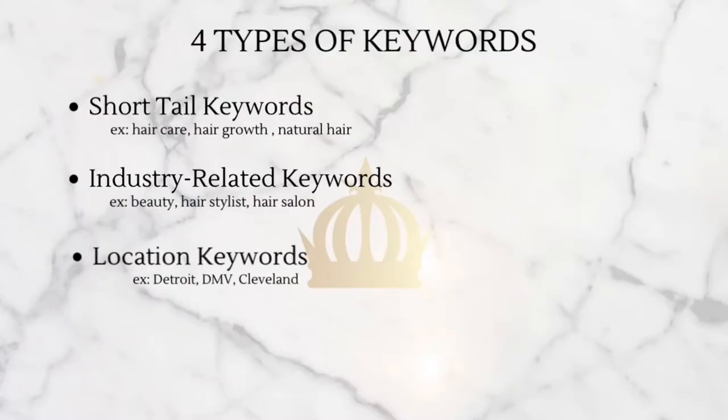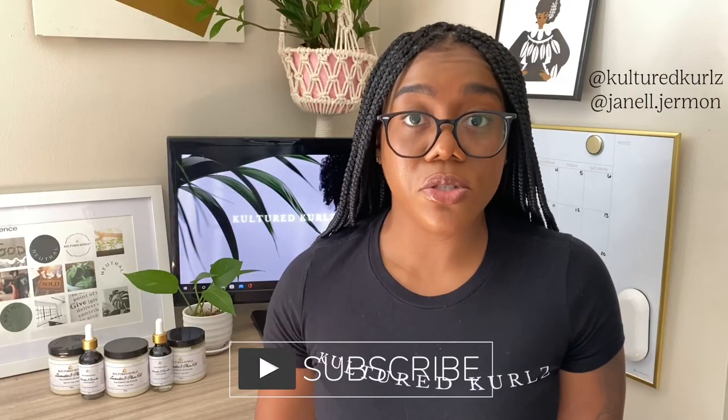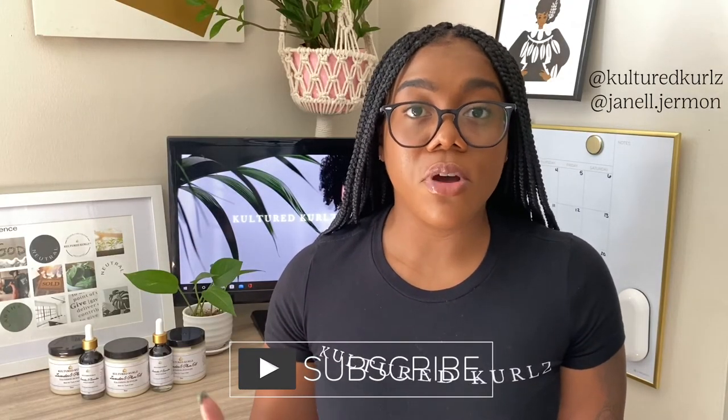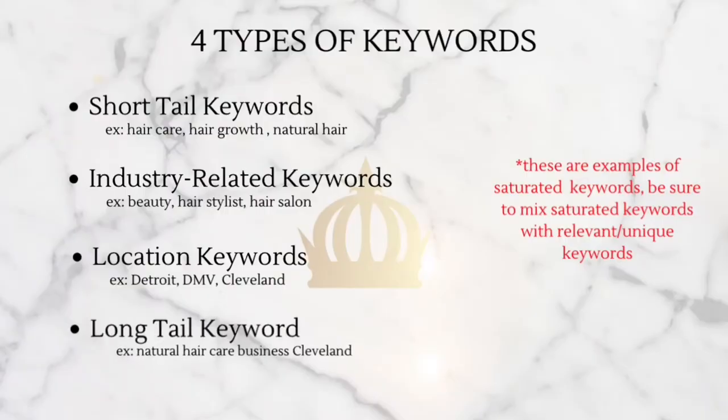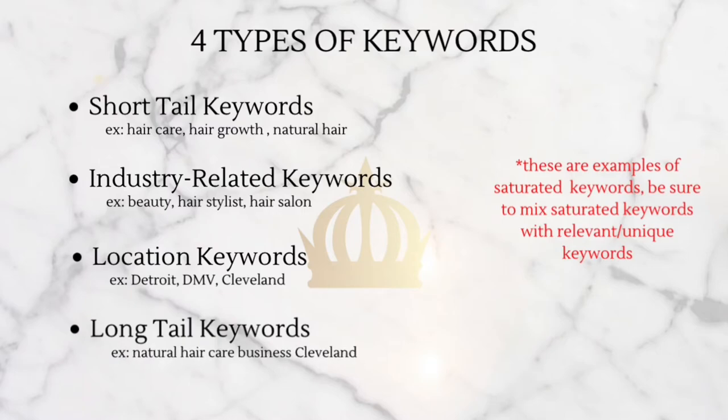The next type is a location keyword — also very simple: where are you? Do you own a brick-and-mortar store, do pop-up shops, and want consumers to know what city you're in? For me, I live in Cleveland, so I use the Cleveland hashtag so people know I'm there. The fourth keyword type is a long tail keyword — this is where you get a bit more descriptive, adding three to four words within your keyword or hashtag. For example, I use 'natural hair care business Cleveland.'